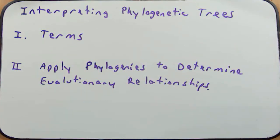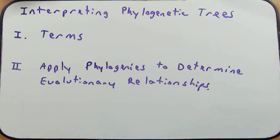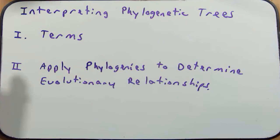Hello and welcome everyone to this video podcast for evolution and diversity. In this video podcast, we're going to talk about interpreting phylogenetic trees. In previous podcasts, we've had several objectives to cover. In this one, what I need to do is define some terms for you. Some of these will be terms we've already talked about, so some of this will be review. Then we're going to take those terms and apply phylogenetics to determine evolutionary relationships.